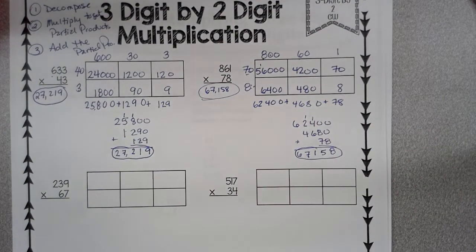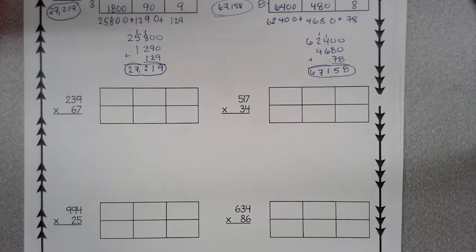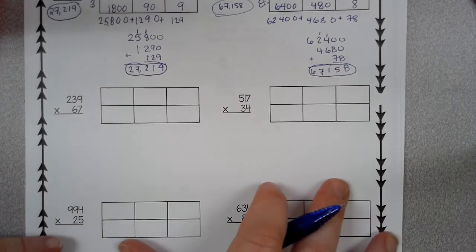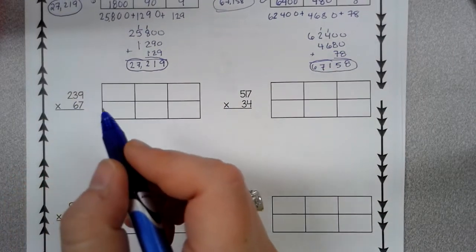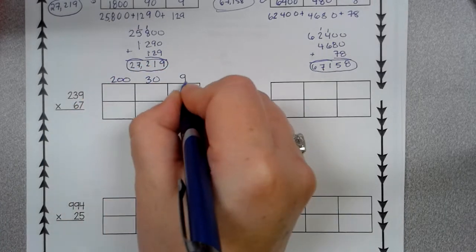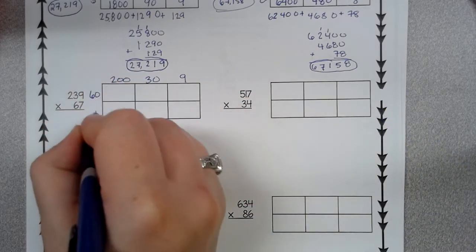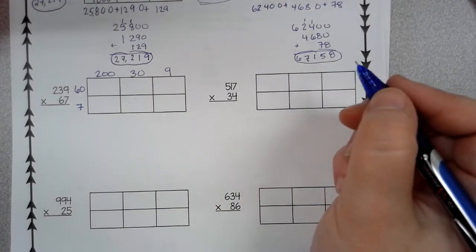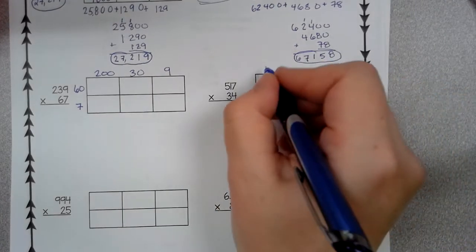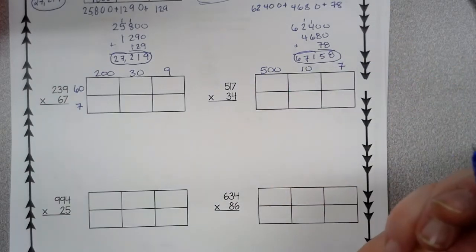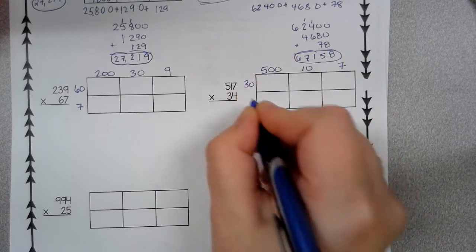Alright, so you continue to do this the whole way. Now, I'm going to go ahead and help you with the decomposition of the numbers, but then I want you to do these four on your own. So 239 decomposes into 200, 30, and then 9. 67 decomposes into 60 and 7. 517 times 34, 500, 10, and 7, and then 30 and 4.